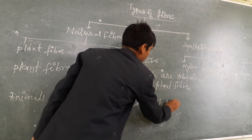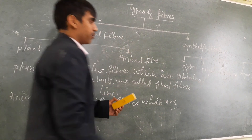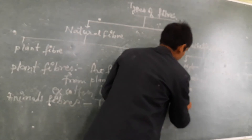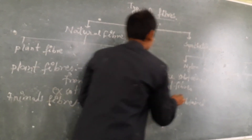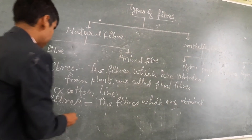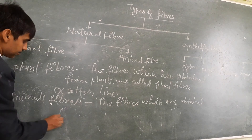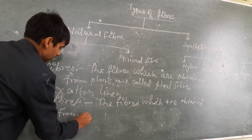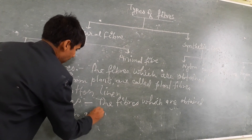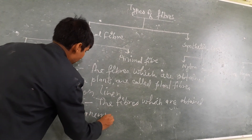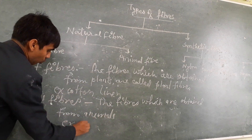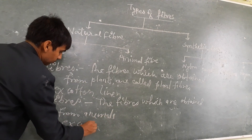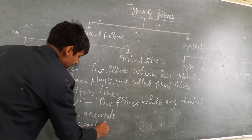Animal fibers are the fibers which are obtained from animals. Examples: wool and silk.